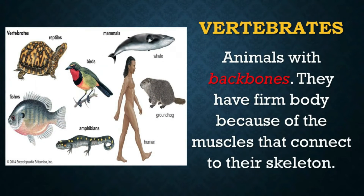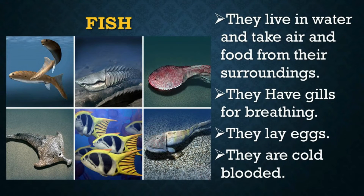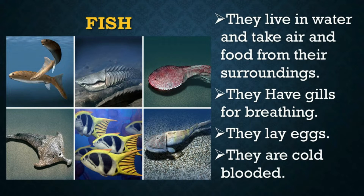Animals with backbones are called vertebrates. They have a firm body because of the muscles that connect to their skeleton. There are five subgroups of vertebrates, namely fish, amphibians, reptiles, birds, and mammals. Fish live in water and take air and food from their surroundings. They have gills for breathing. They reproduce either by internal or external fertilization of the egg. They lay eggs. Their body temperature changes with the environment; therefore, they are called cold-blooded. Some examples are milkfish or bangus, mudfish or dalag, tuna, and galunggong.